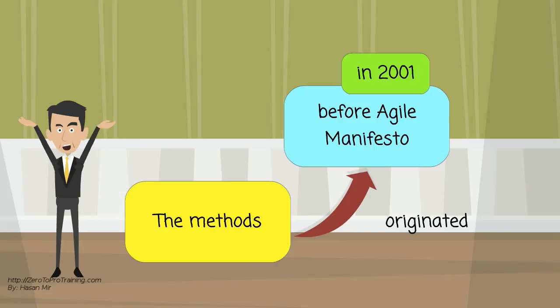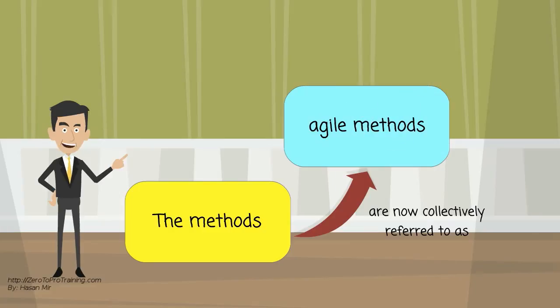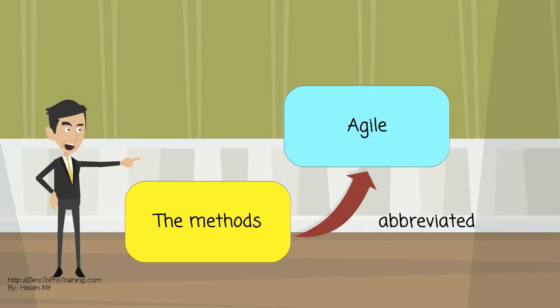Although these originated before the publication of the Agile Manifesto in 2001, they are now collectively referred to as Agile Methods and often abbreviated loosely as Agile with a capital A.